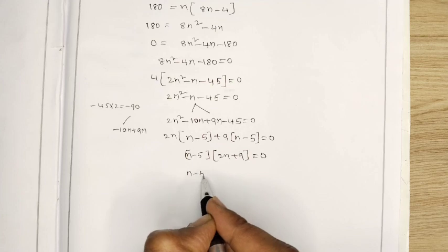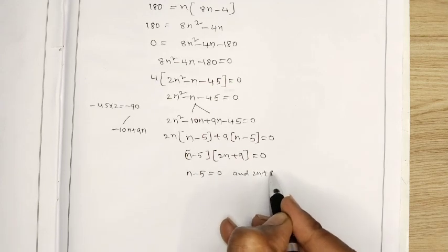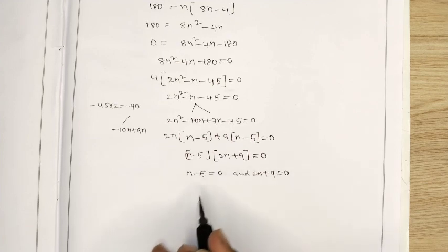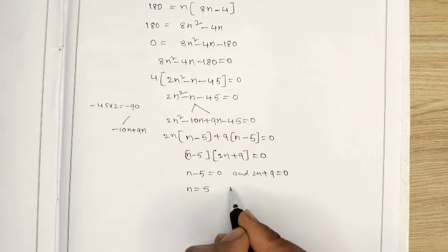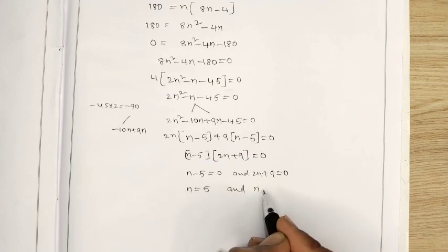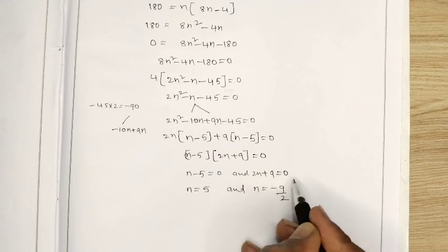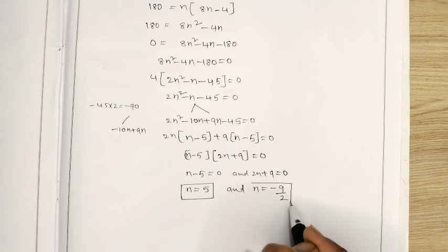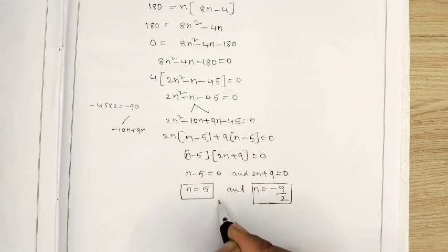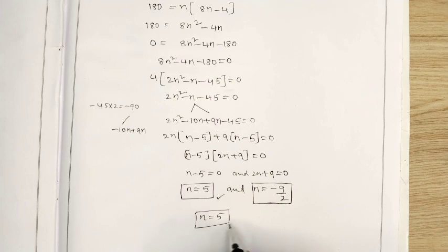n minus 5 equals 0 and 2n plus 9 equals 0. So n equal 5 and n equal minus 9 by 2. These are the two n values, but we have to take the positive value, that is n equal to 5. The negative value is rejected.